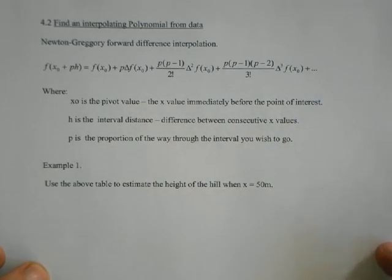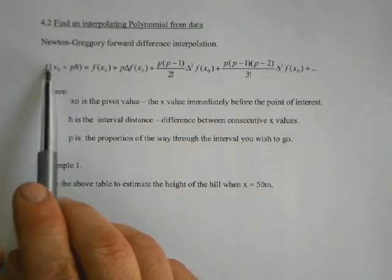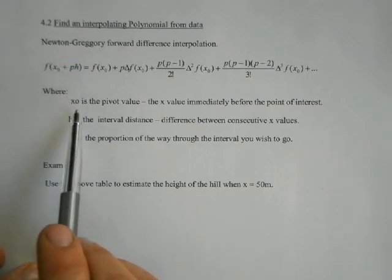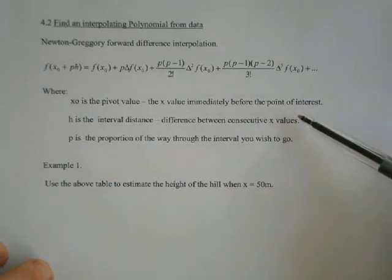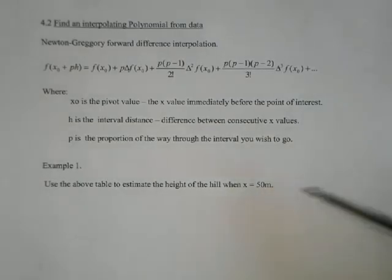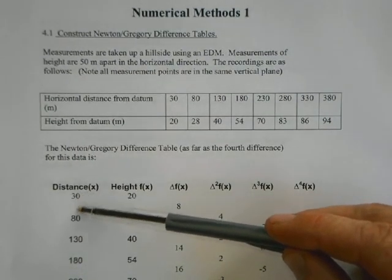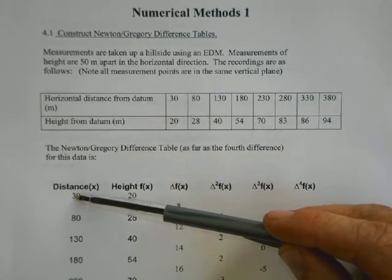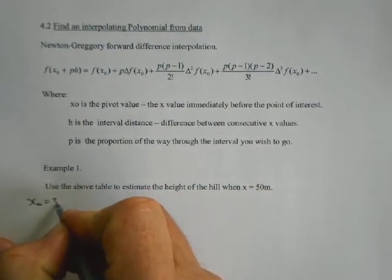The way that we do it is we're trying to find the value at a particular point. And the point is defined in this manner here, where x0 is the pivot value, the value immediately in front of the point of interest. So in the example we're going to do, we're worrying about what's happening at 50 meters. So 50 meters is between 30 and 80. So our pivot point must be 30. It's the point which is just in front. So our pivot point in the example we're going to be doing is 30 meters.